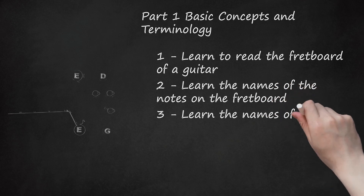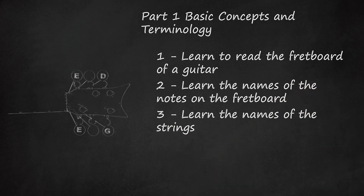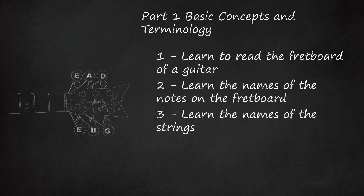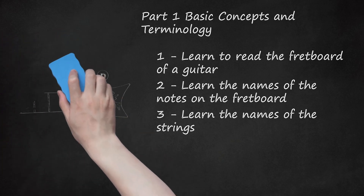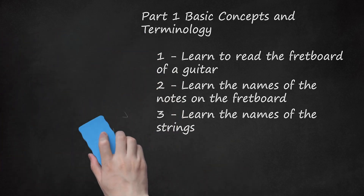Learn the Names of the Strings. You can talk about the different strings with names like Thickest, Second Thickest, and so on, but it's a lot easier to discuss scales if you know the strings' proper names. The strings are named after the note they play when you don't press any of the frets. On a normal 6-string guitar in standard tuning, the strings are E (thickest), A, D, G, B, and E (thinnest). Note that the thickest and thinnest strings share the same name, so some people say low E and high E to tell them apart.